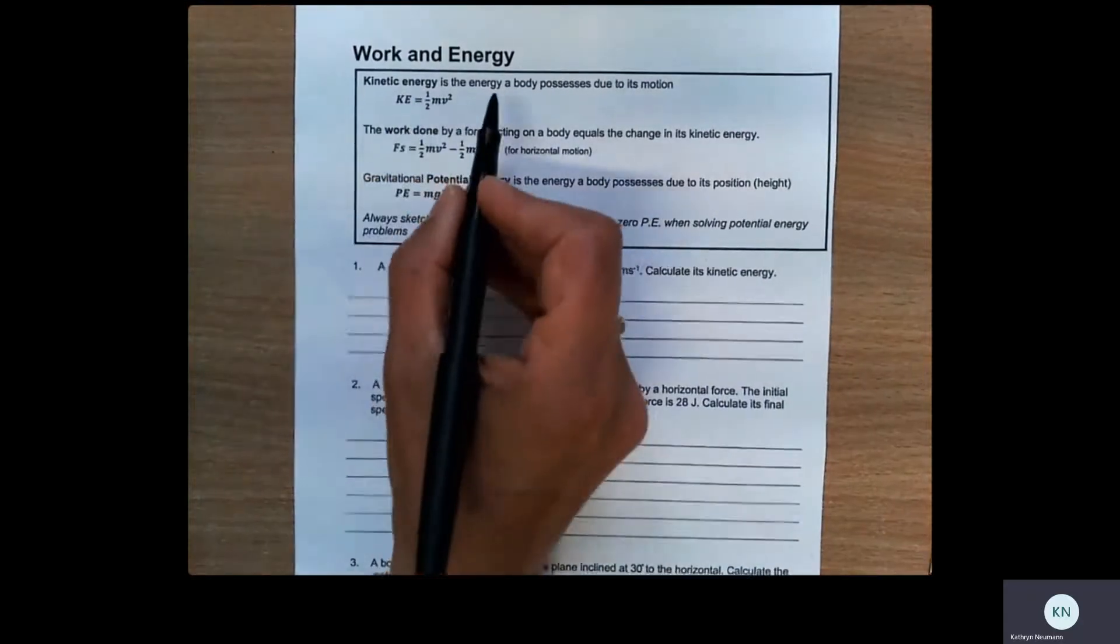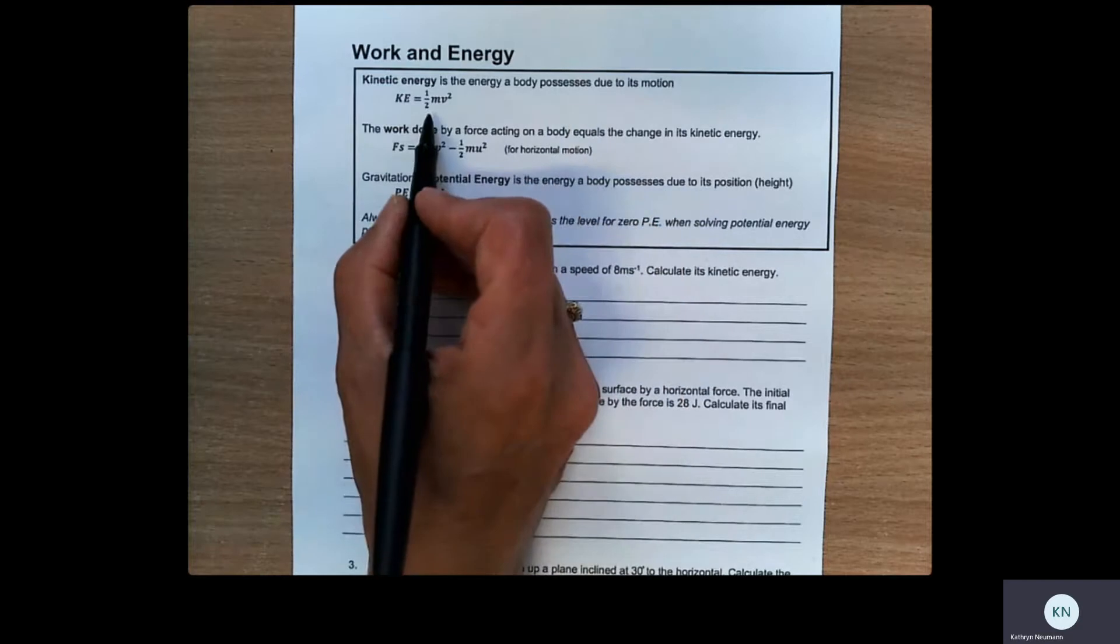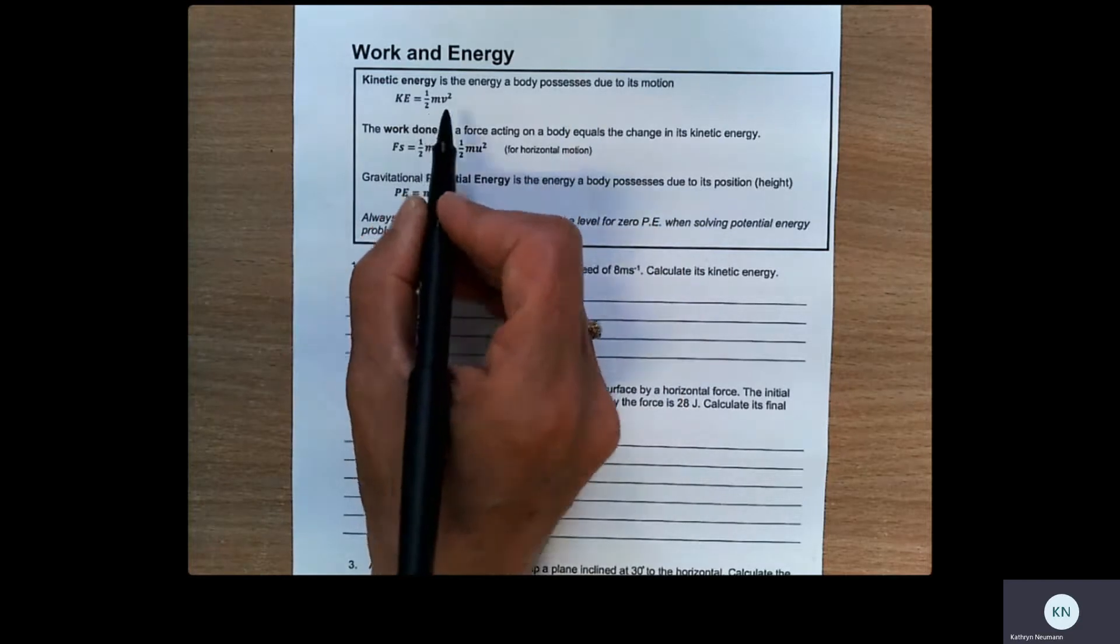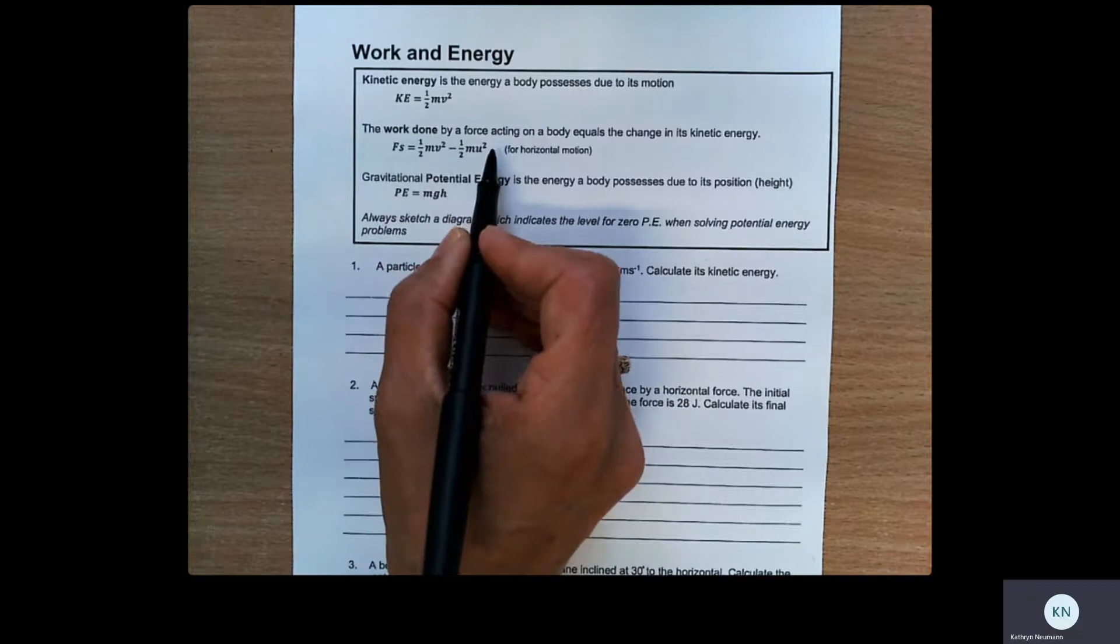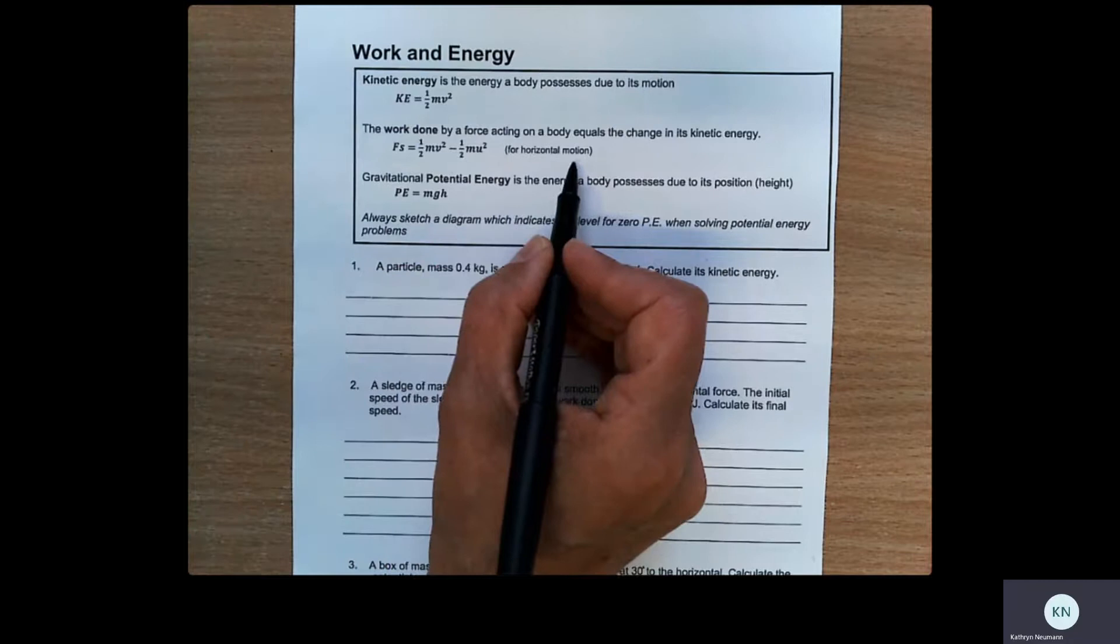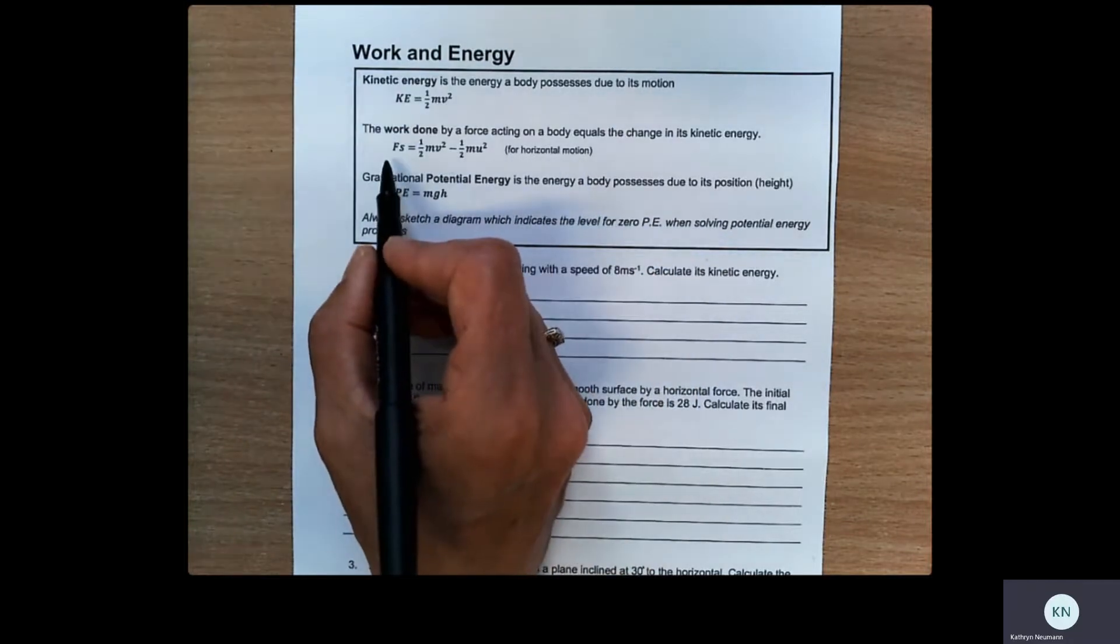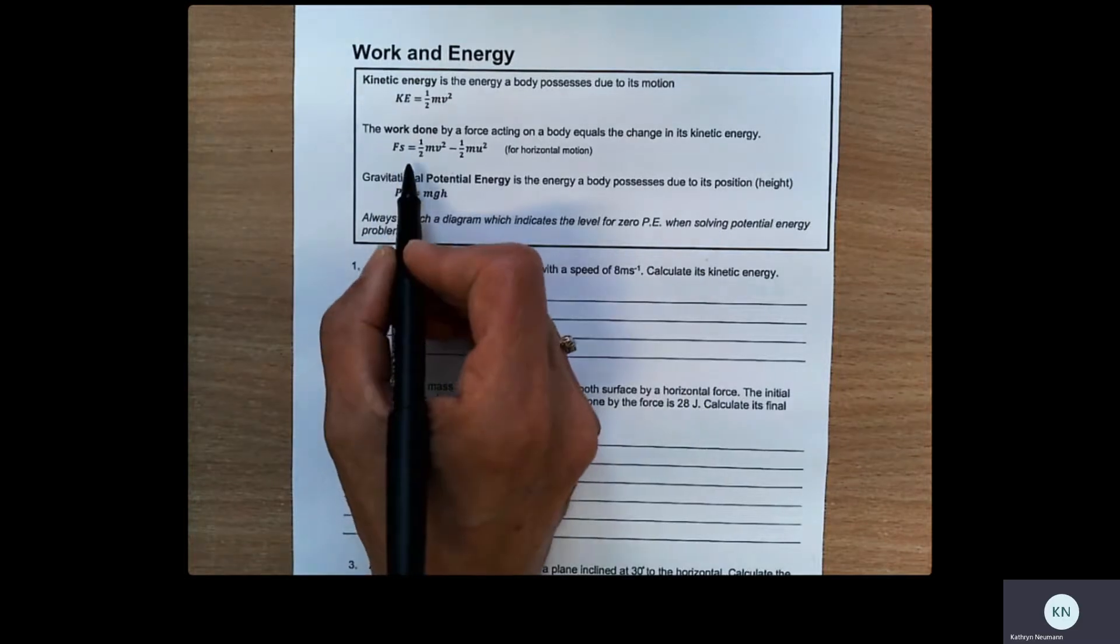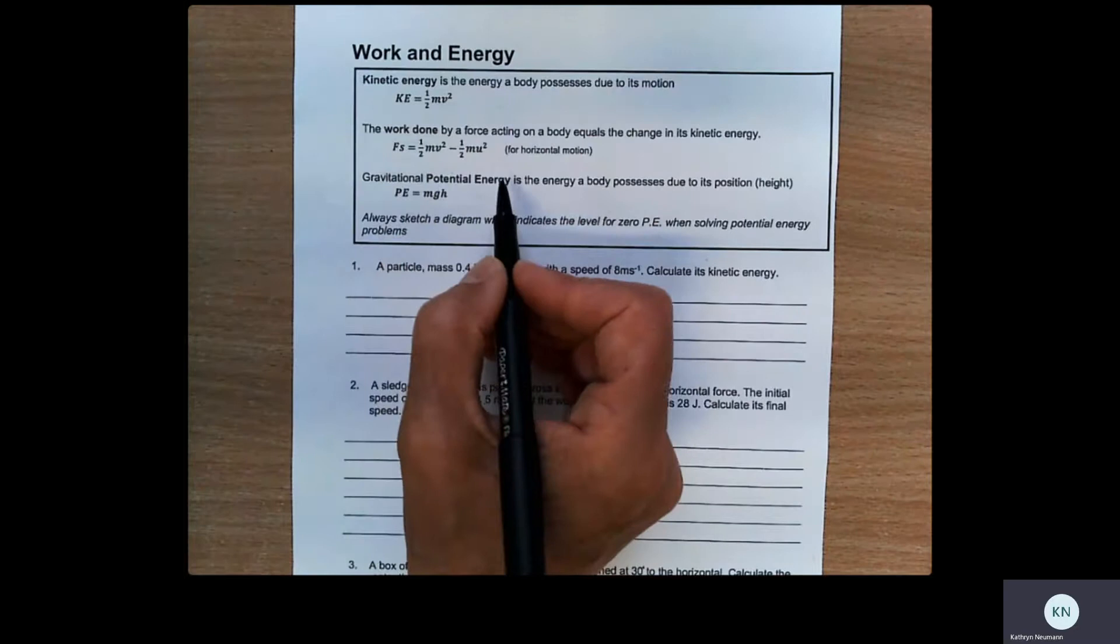So we've got kinetic energy, which is energy possessed due to motion. And that's equal to a half mv squared. The work done by a force acting on a body also equals its change in kinetic energy. And this is just for horizontal motion. So if a force acts on a body, that will increase its kinetic energy. So if we find the increase, that will be equal to the work done.